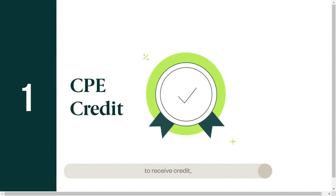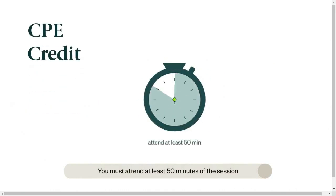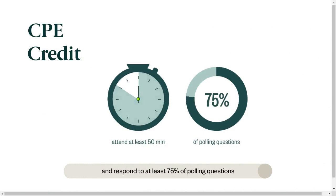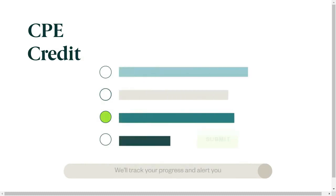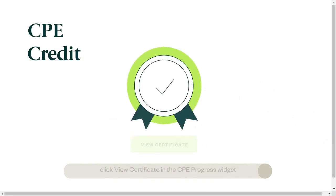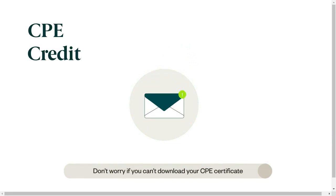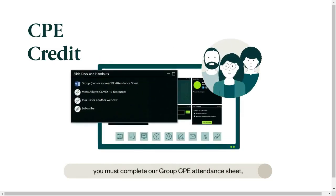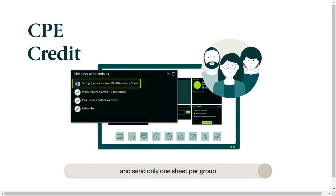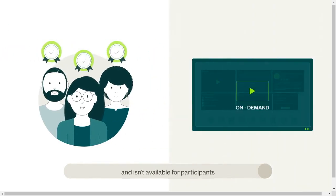Today's session offers one CPE credit. To receive credit, you must meet the National Association of State Boards of Accountancy requirements. You must attend at least 50 minutes of the session and respond to at least 75% of polling questions. To participate in polls, check the button next to your answer within the slide window and click submit. We'll track your progress and alert you when you've earned CPE credit. You can then click the certificate icon in the CPE progress widget and download your CPE certificate. If attending in a group, you must complete our group CPE attendance sheet. CPE credit can only be awarded to participants registered as themselves and isn't available for those who view the on-demand version.